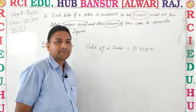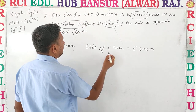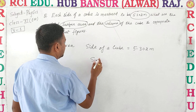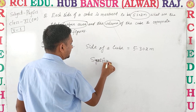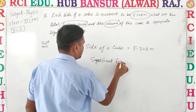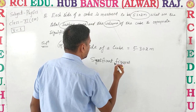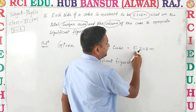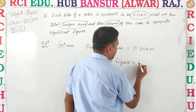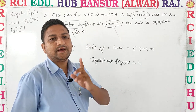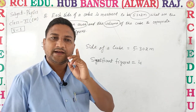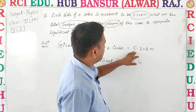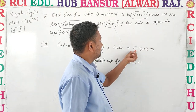यहाँ पर इसके significant figures देखते हैं। इसमें significant figures कितने हैं? ध्यान से देखें तो significant figures हैं 1, 2, 3, 4 — तो इसके significant figures हैं 4. Significant figures के rules पढ़ा दिए हैं, उनको अच्छे से देखना है। तो यहाँ पर significant figures जो हैं वो हैं 4.